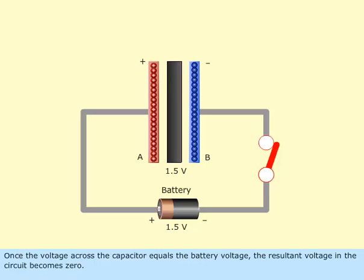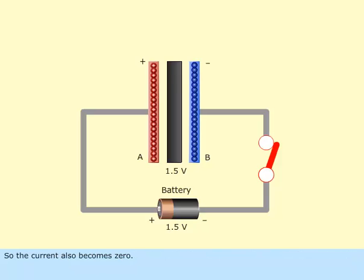Once the voltage across the capacitor equals the battery voltage, the resultant voltage in the circuit becomes zero. So the current also becomes zero. The capacitor is now fully charged.